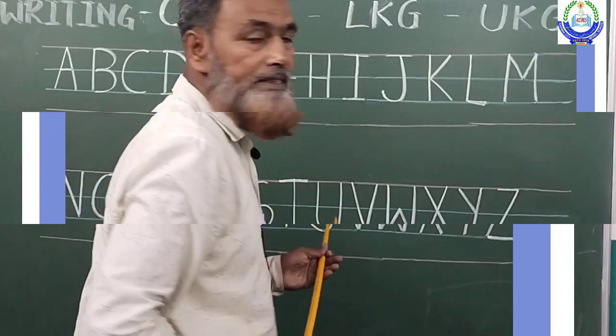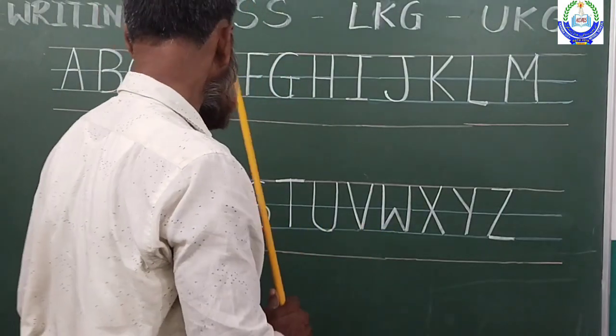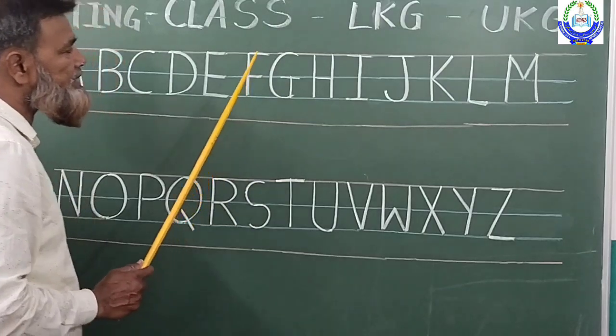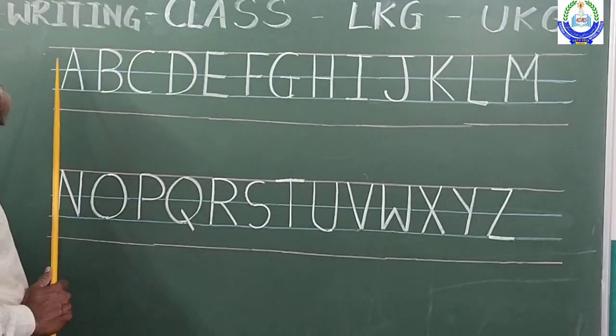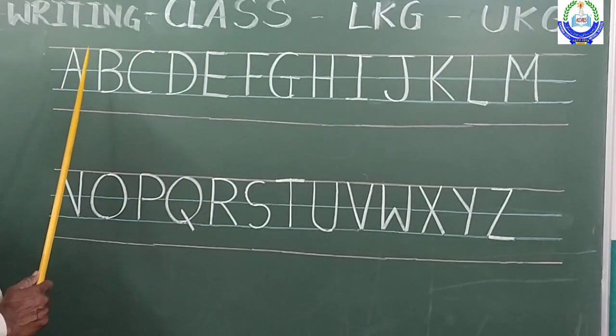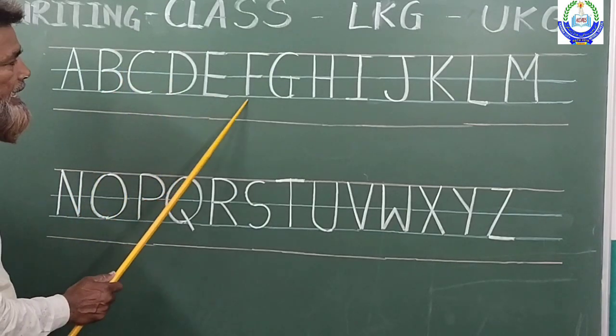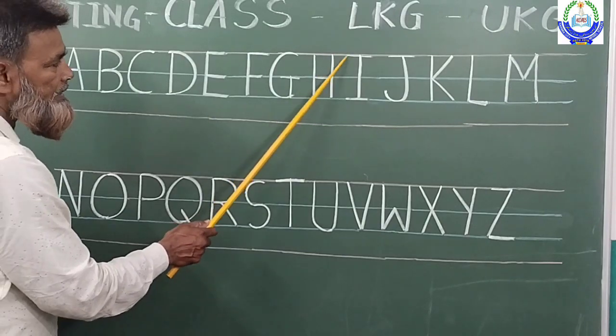See boys and girls, only these three lines are used. You have in a four line copy, you see there is... these three lines are only used. A, B, C, D, E, F, G, H, I.